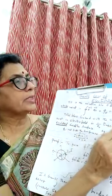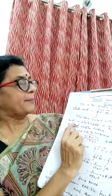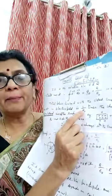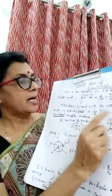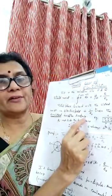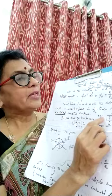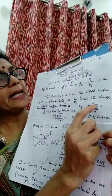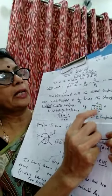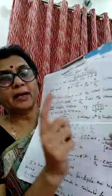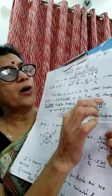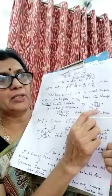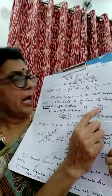The total flux linked with the closed surface when it is kept in air or free space and in an electric field is equal to 1/ε₀ times the charge enclosed inside the surface. For example, if this is the closed surface, the charge present inside is 6 positive and outside there are 4. But we consider only the charge inside — Gauss Theorem is applicable only to the charge inside. The flux will not be affected by the outside charge, only by the charge inside.